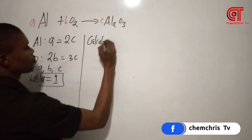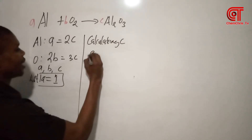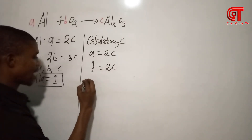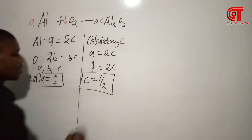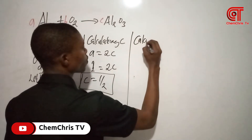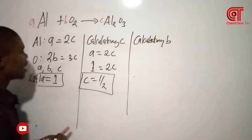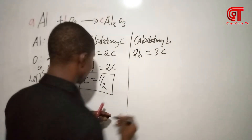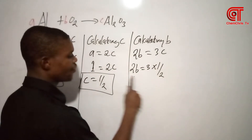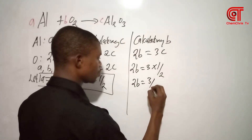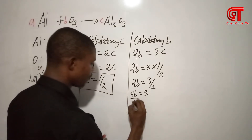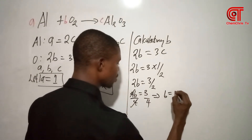Calculating C: from A equals 2C, if A is 1, then 1 equals 2C, so C equals 1/2. Now calculating B: from 2B equals 3C, and C is already 1/2, we get 2B equals 3 × 1/2, which is 3/2. So 4B equals 3, meaning B equals 3/4.